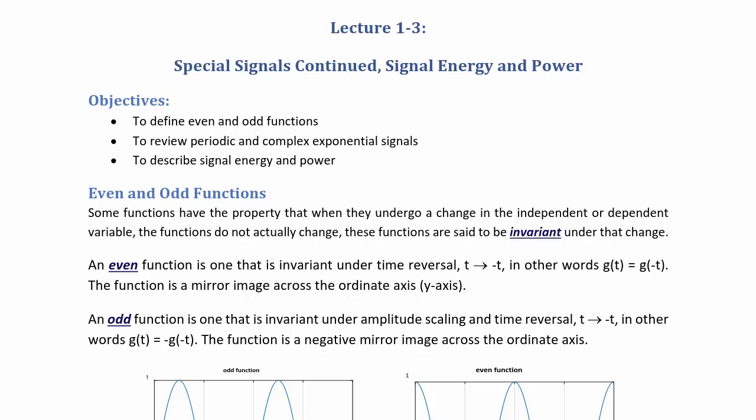An odd function is one that is invariant under amplitude scaling and time reversal, t to negative t. In other words, g(t) equals negative g(-t). This function is a negative mirror image across the ordinate axis.